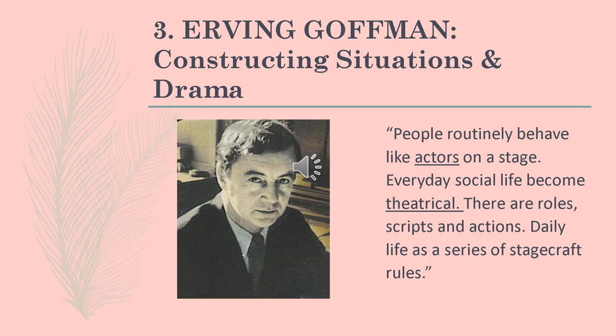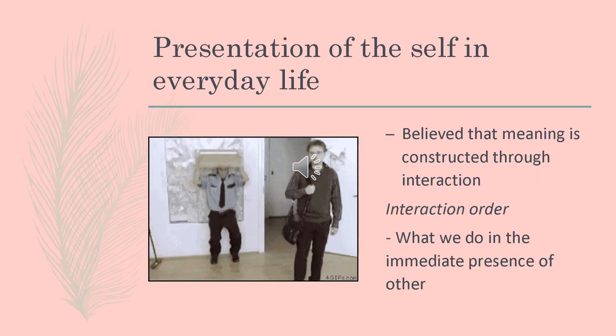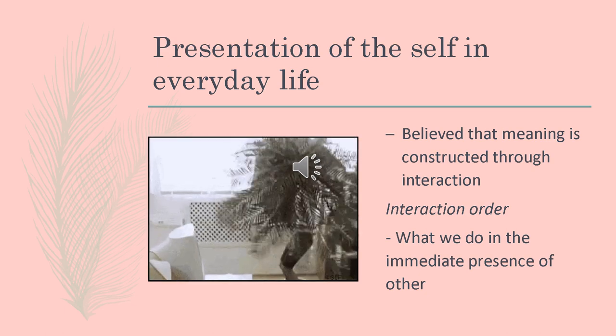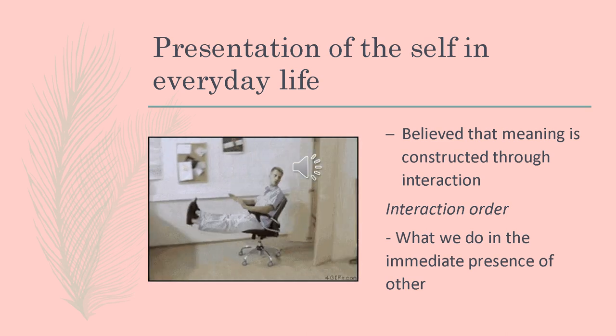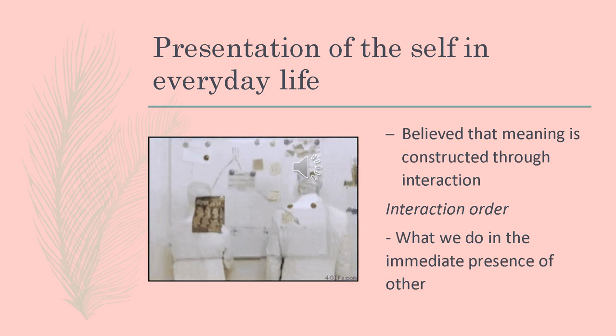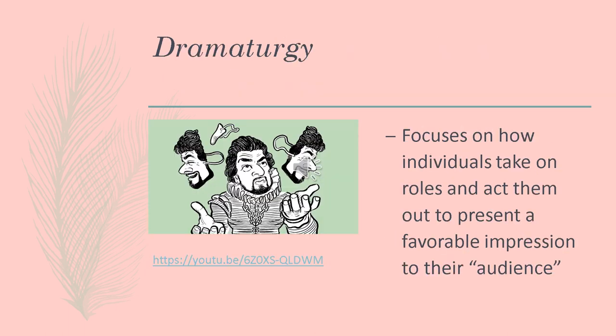The third perspective is constructing situations and drama by Erving Goffman. According to him, people routinely behave like actors on a stage — everyday social life becomes theatrical, and there are rules, scripts, and actions. Daily life is seen as a series of stagecraft rules. For example, in this picture, this is how we interact with other people in the immediate presence of others. It is believed that meaning is constructed through interaction. Dramaturgy refers to how we act and the roles we take on in a present situation.